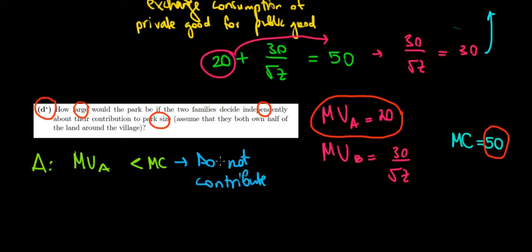Now, with that in mind, what is the other family going to do? Family Bestly - the other player B - is going to think about his own marginal utility because his marginal utility does depend on the level of the park size. So he is willing to invest in a certain amount.